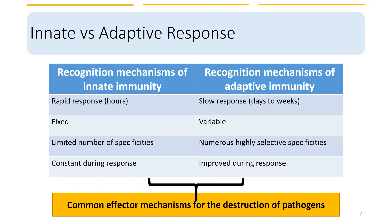Here is a table that briefly summarizes the key differences of recognition mechanisms between innate and adaptive immunity. Innate immunity is very fast; it recognizes a limited number of molecules or antigens, and its responses are constant and don't change. On the other hand, adaptive immunity responses are slow, but they can vary their recognition and be highly selective toward specific antigens. Their responses usually improve over time and with second exposures. What they have in common is that there are effector mechanisms to destroy the pathogens.